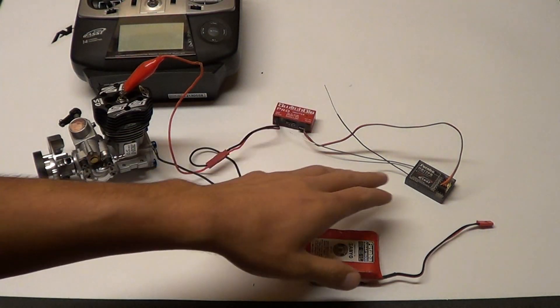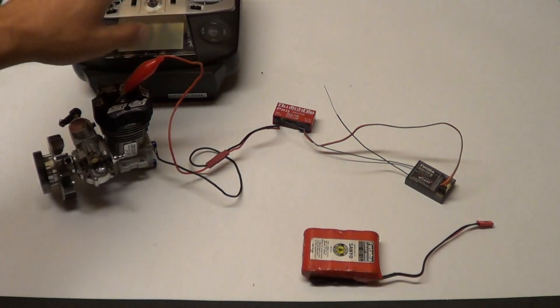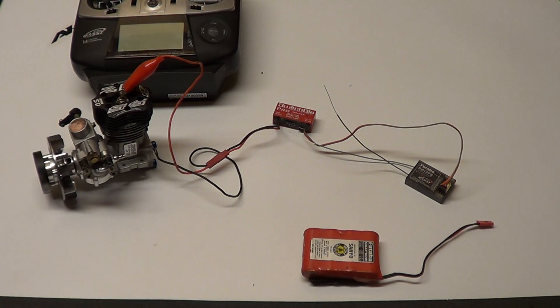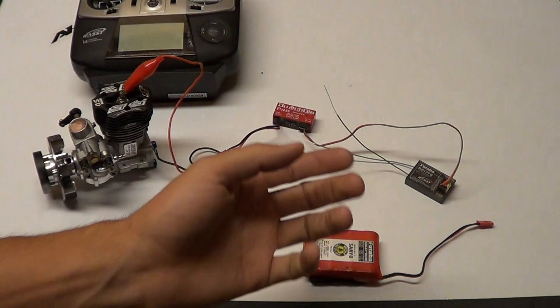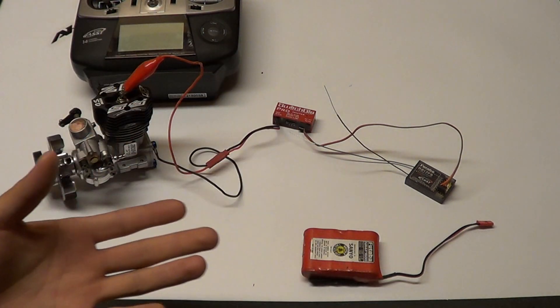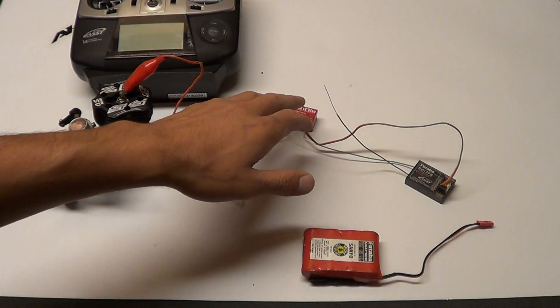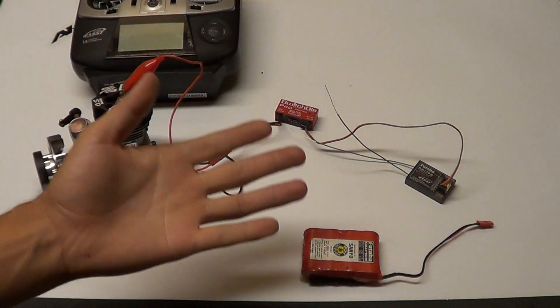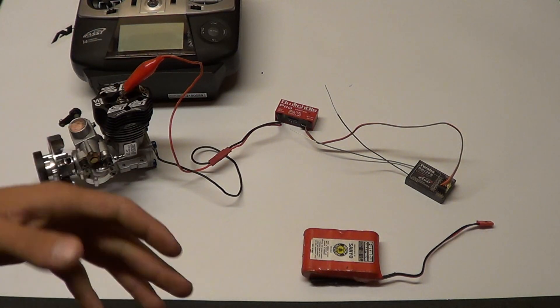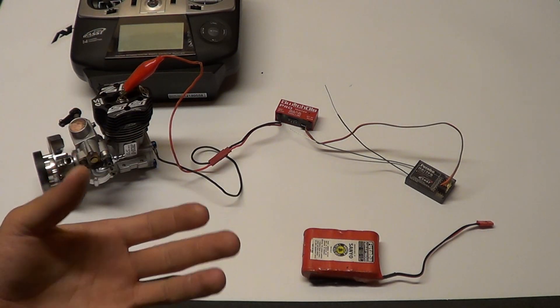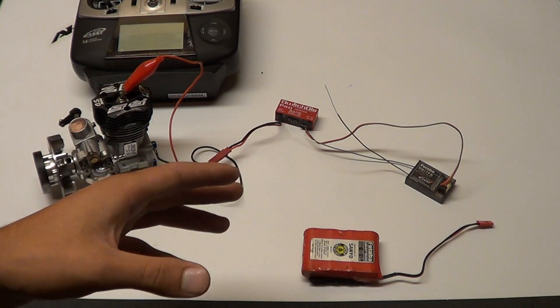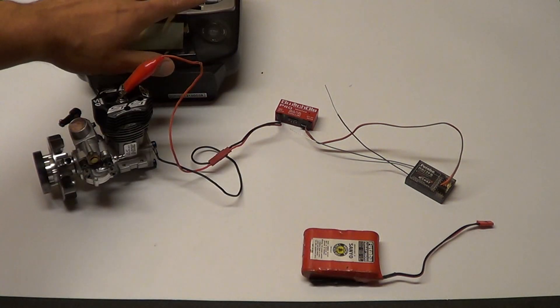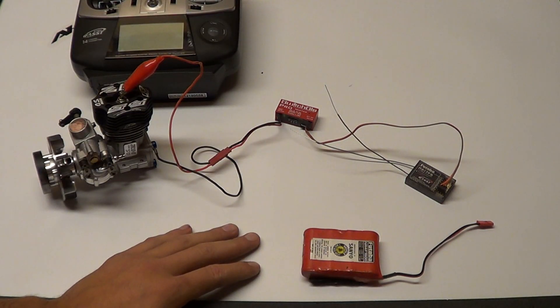I have it plugged into channel 6, which I've pre-mixed on this radio. If you have Spektrum or other radios, you can mix it wherever you want, put it on a toggle switch. For helicopter guys, you can mix it with your throttle, especially with throttle hold, so it only comes on when throttle hold is on.